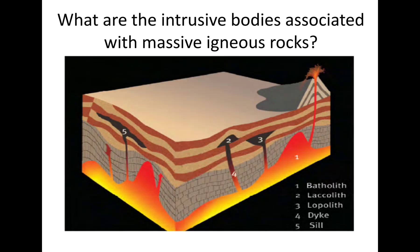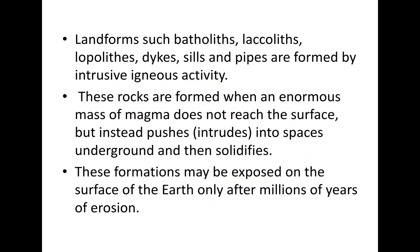We have the batholith — number one — which is the largest of the massive igneous rocks. The second one is the laccolith, which has a mushroom shape. The third one is the lopolith. The fourth one is the dyke, and the fifth one is the sill. So landforms such as batholith, laccolith, lopolith, dykes, sills, and pipes are formed by intrusive activities.